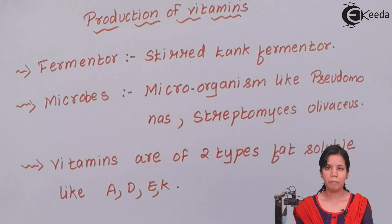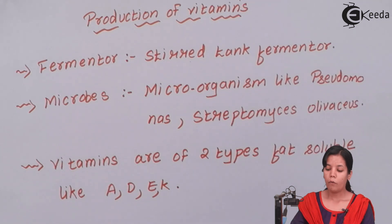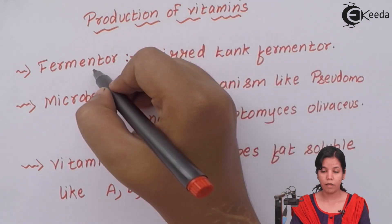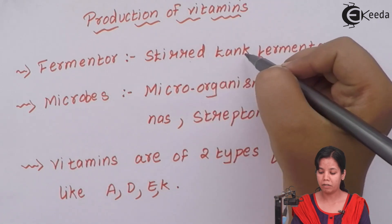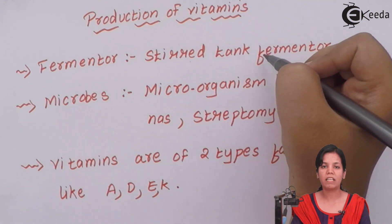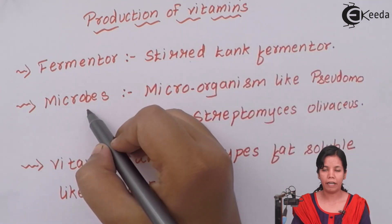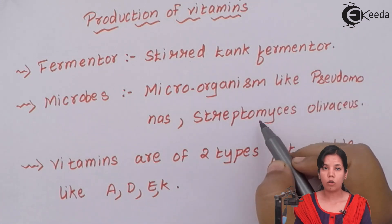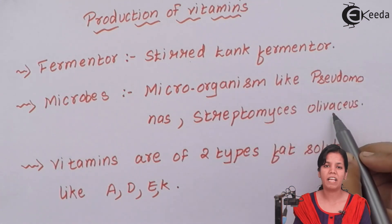Let us see how vitamins are made and what materials are required. For the production of vitamins, the fermenter used is the stir tank fermenter, where you can continuously shake or agitate the raw material, oxygen, and microbes to enhance mixing. The microbes widely used are microorganisms like Pseudomonas, Streptomyces, and others, which are widely used for vitamin production whether fat-soluble or water-soluble.